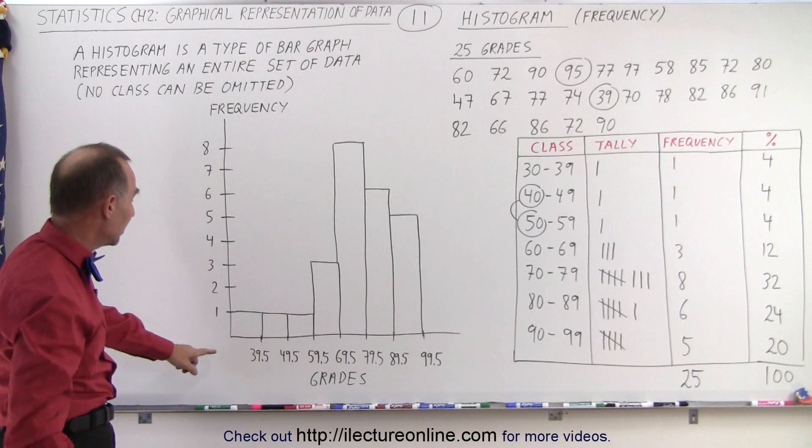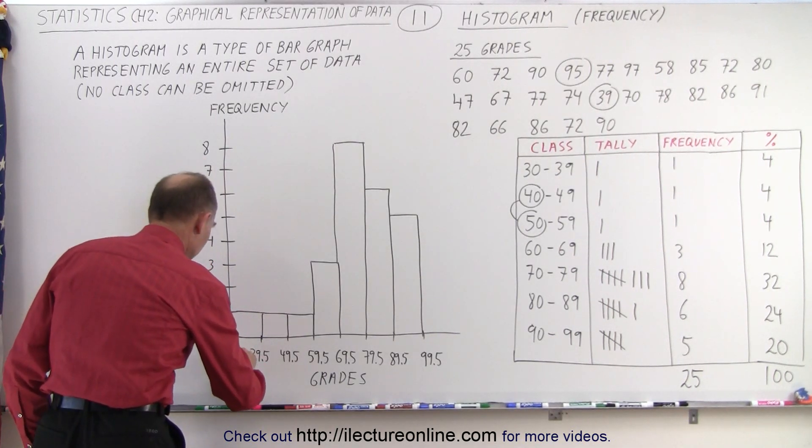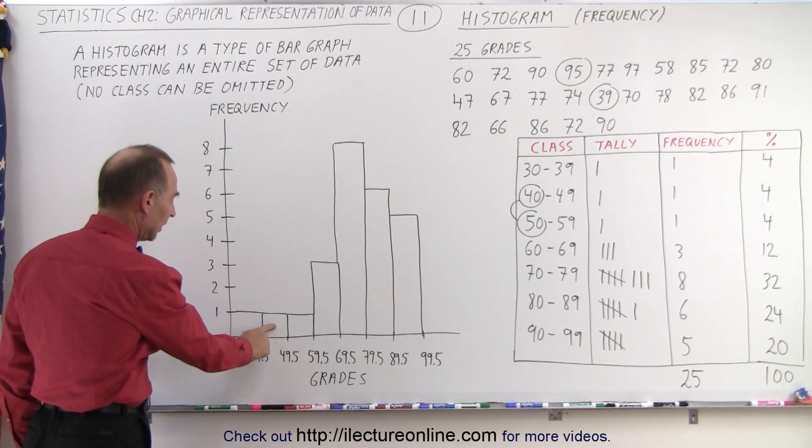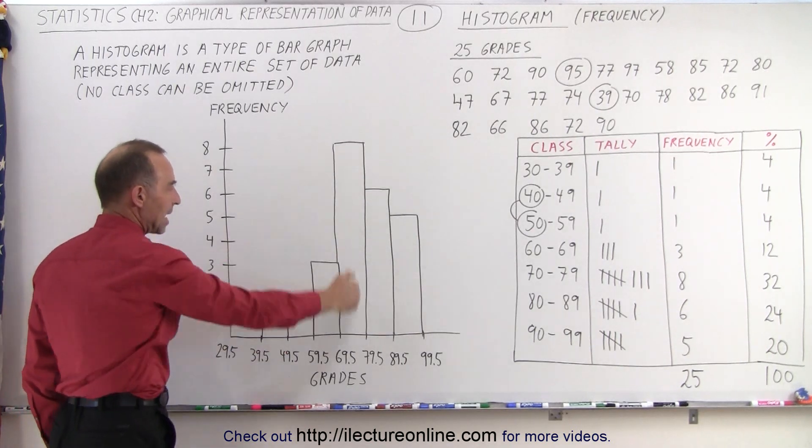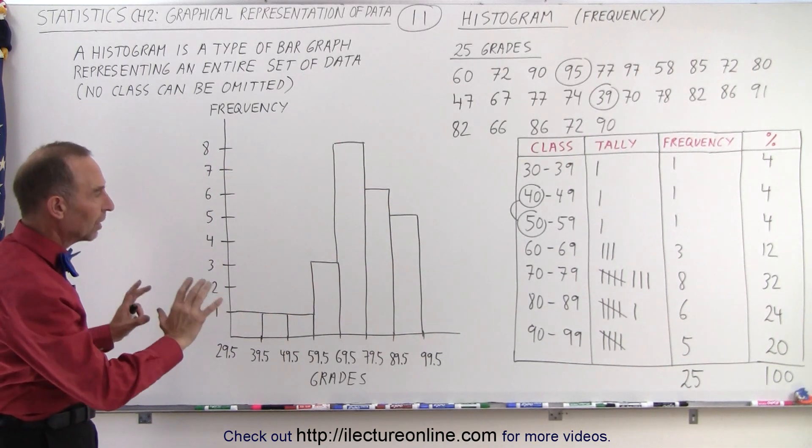Notice you can see that in the first class—and I should put the boundary here—that would be 29.5 to 39.5. The frequency is 1. The next class is 1, the next class is 1, a frequency of 3, 8, 6, and 5. And so that represents all the data.